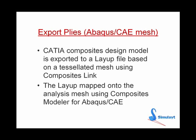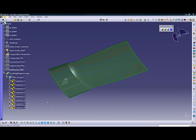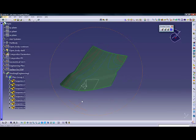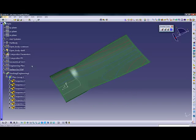Either way, at a suitable point in development it will be necessary to verify the design by use of analysis. Composite's Link supports this by exporting the ply definitions and allowing them to be used within an analysis package such as Abacus CAE, using the Composites Modeler application. Once the designer has defined the ply stacking in CATIA V5, Composite's Link exports the entire ply model to a layout file. A ply group of the entire ply stack created in CPD can be exported to a layout file.